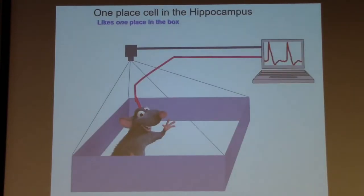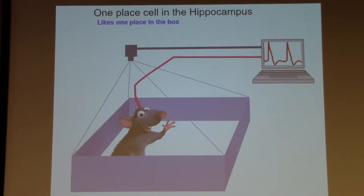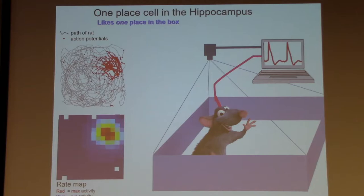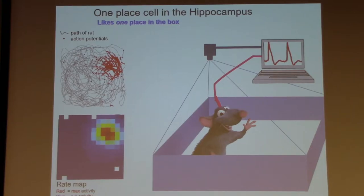Place cells are cells that selectively respond to one location within some arena. You have a rat in a box running around while you record from the hippocampus. The gray lines show the path; the red dots are action potentials from that cell. We can turn that into a heat map. The cell prefers one location.